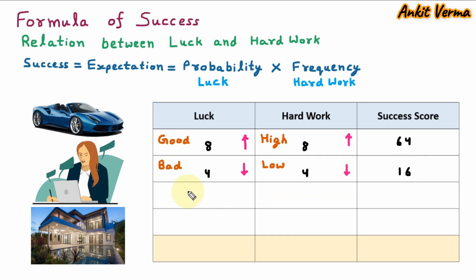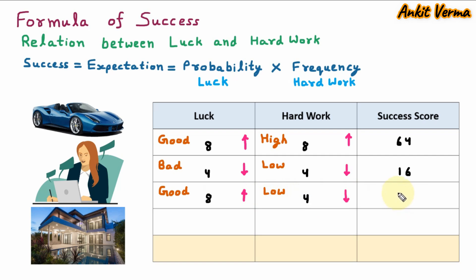In Case 3, luck is good — represented with an upside arrow — with a score of 8 out of 10. But the hard work we are doing is low — represented with a downside arrow — with a score of 4 out of 10. So 8 into 4 equals 32. This means if we are born at a very good place and have everything, but we are not doing any work, our score is only 32.